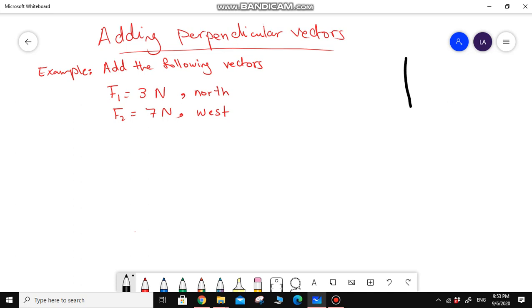Again, let us revise the directions: north and south, east and west. As you know from your previous studies, perpendicular vectors means vectors that make 90 degrees.